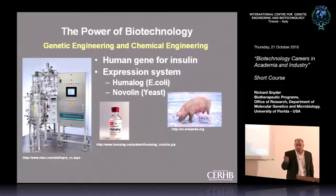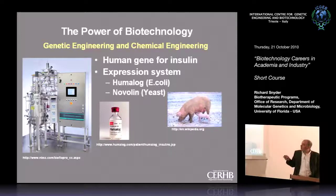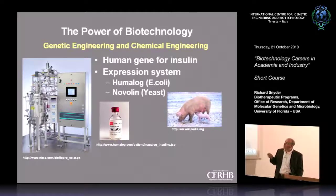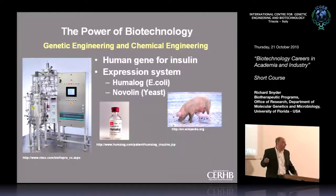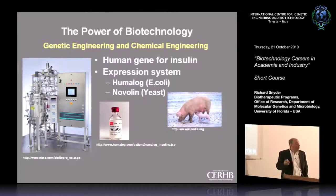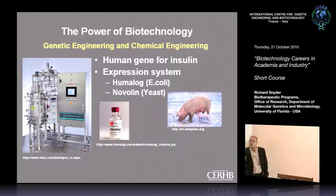Biotechnology is the bringing together of genetic engineering and chemical engineering. What's shown here is where insulin used to be harvested for human use in diabetes. Obviously, engineering E. coli or yeast to express that human protein and then making it in a bioreactor is the modern approach. By moving it from there to here, you've made a process that is very highly controlled. The control and understanding of manufacturing processes for products that go into humans is one of the main themes of my talk today.